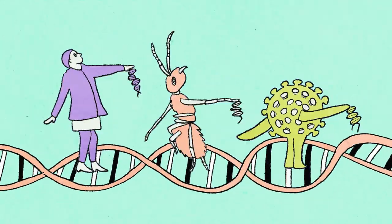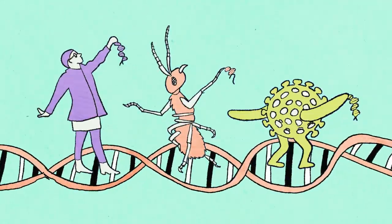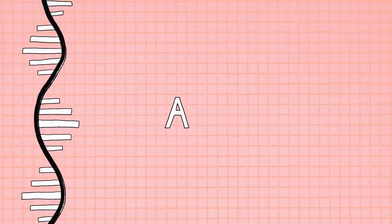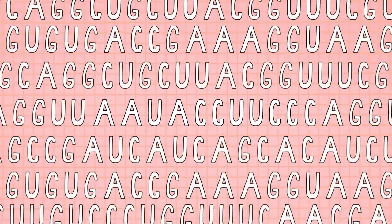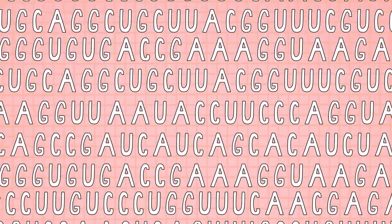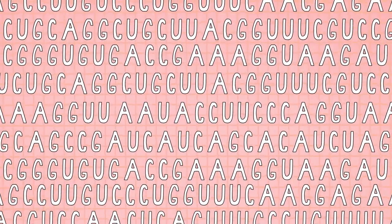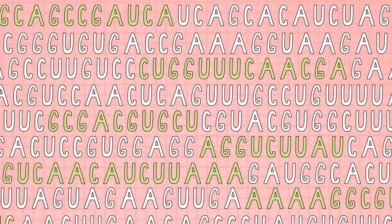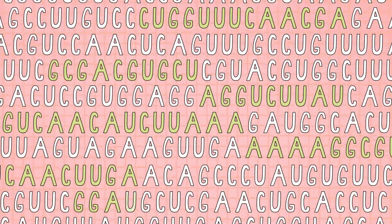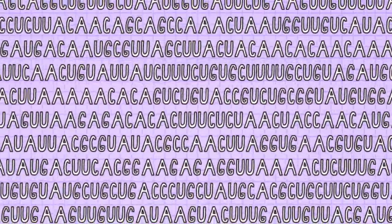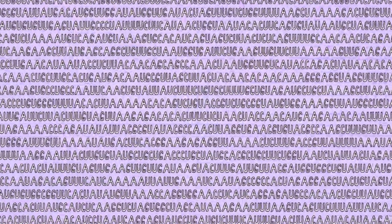Genomic sequencing lets us decode all that information. This is what a decoded genome looks like — a string of letters. You may be thinking that still looks like code, and you're not wrong. All the combinations of letters still have to be analyzed to understand what we're seeing. But over the last few decades, we've gotten pretty good at doing that and doing it quickly. This is the genome of SARS-CoV-2, which causes COVID-19 — about 30,000 letters.